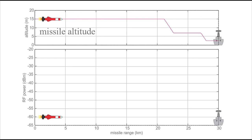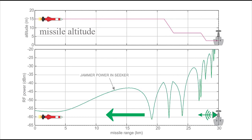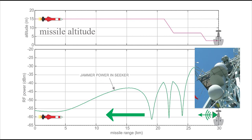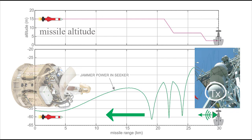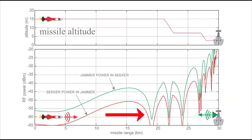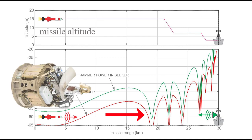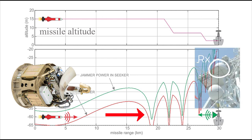If you code up the equations and apply them to a sea-skimming missile, the jammer power at the seeker antenna terminals looks like this graph. The amplitude of this signal is determined by the jammer transmitter power, the gain of the jammer's transmit antenna, and the gain of the seeker antenna. We can do the same thing for the seeker power at the jammer — it's the same overall shape but different amplitude, determined by the seeker transmitter power, seeker antenna gain, and the gain of the jammer's receive antenna.